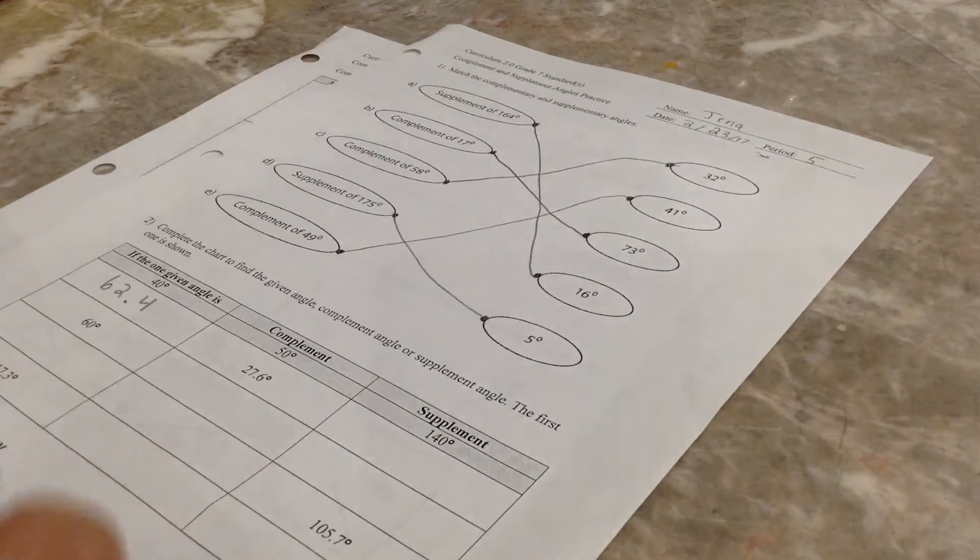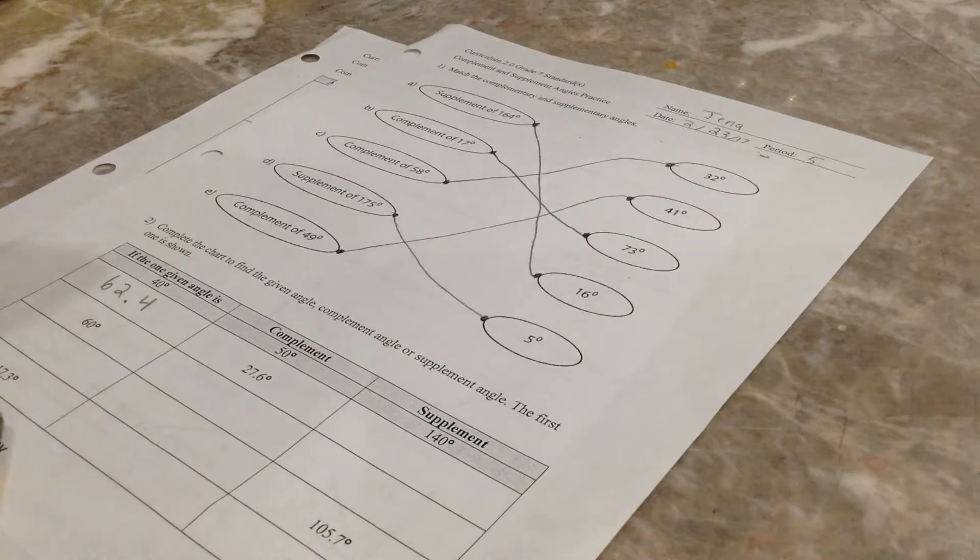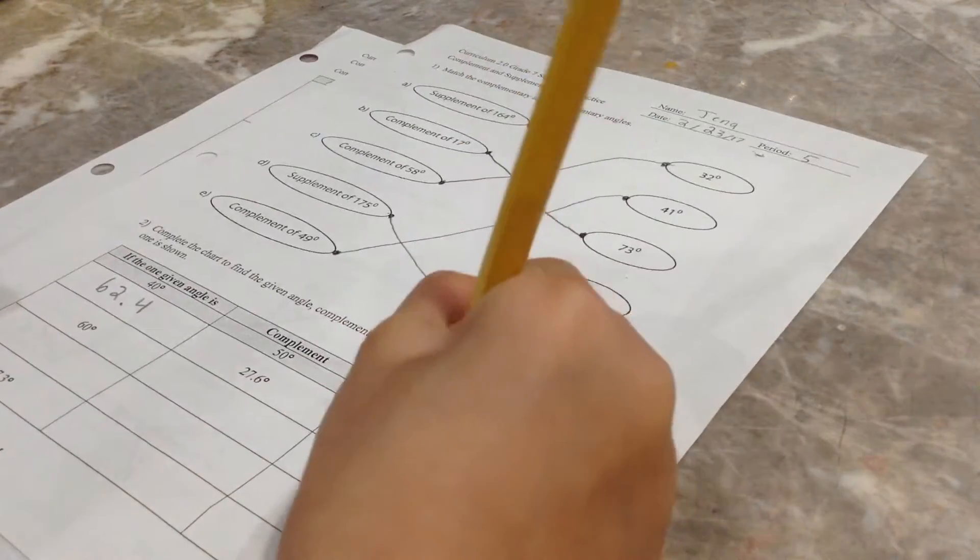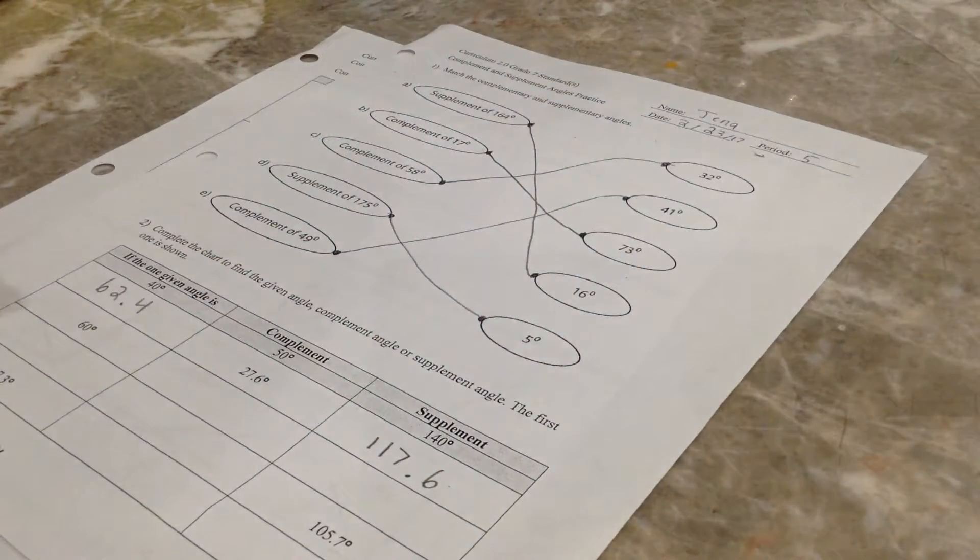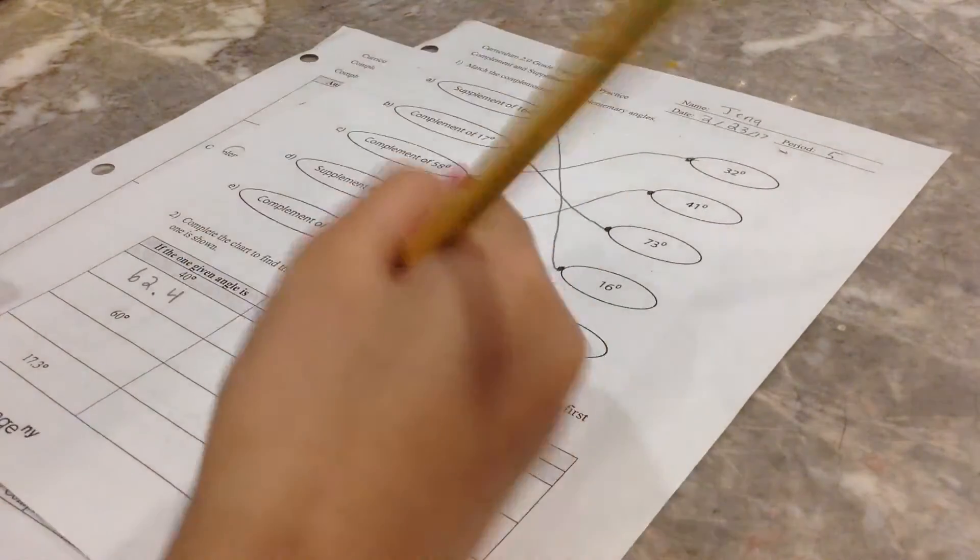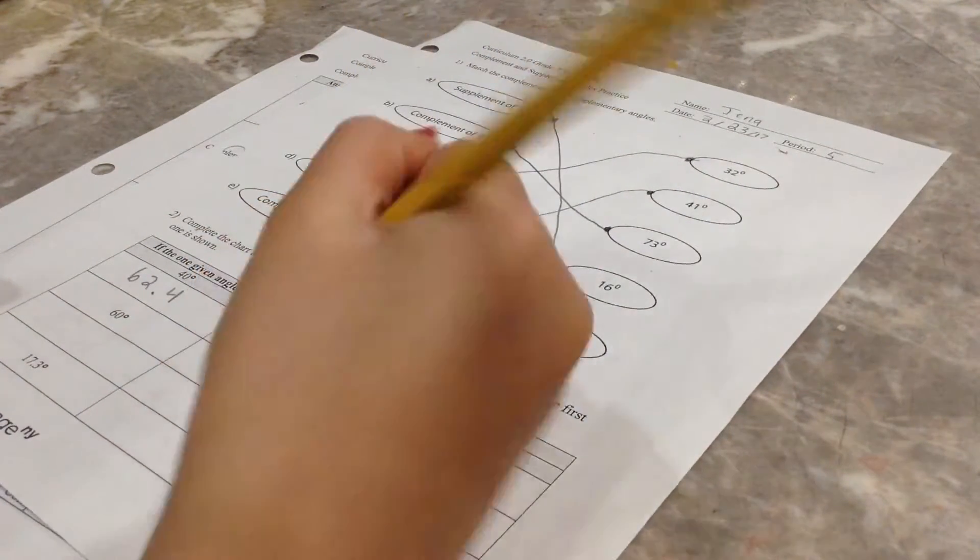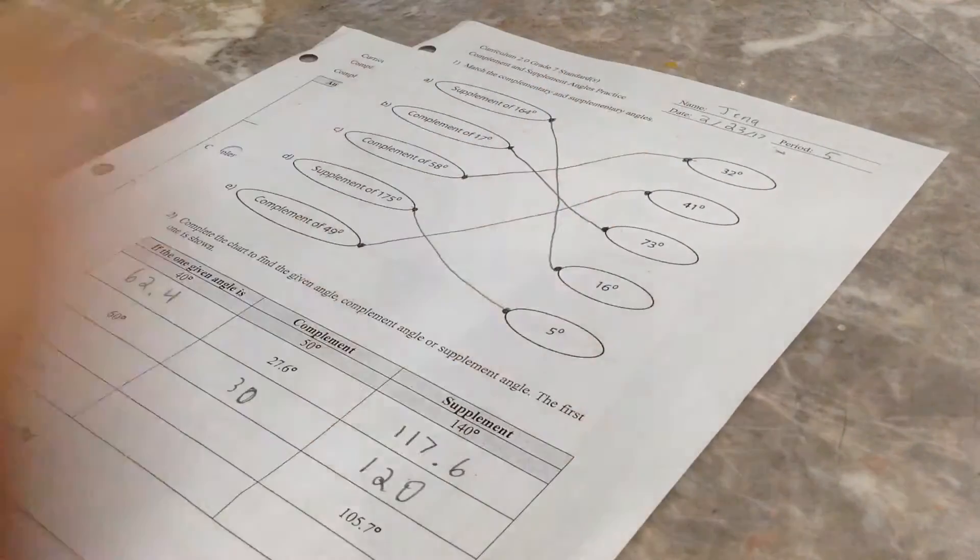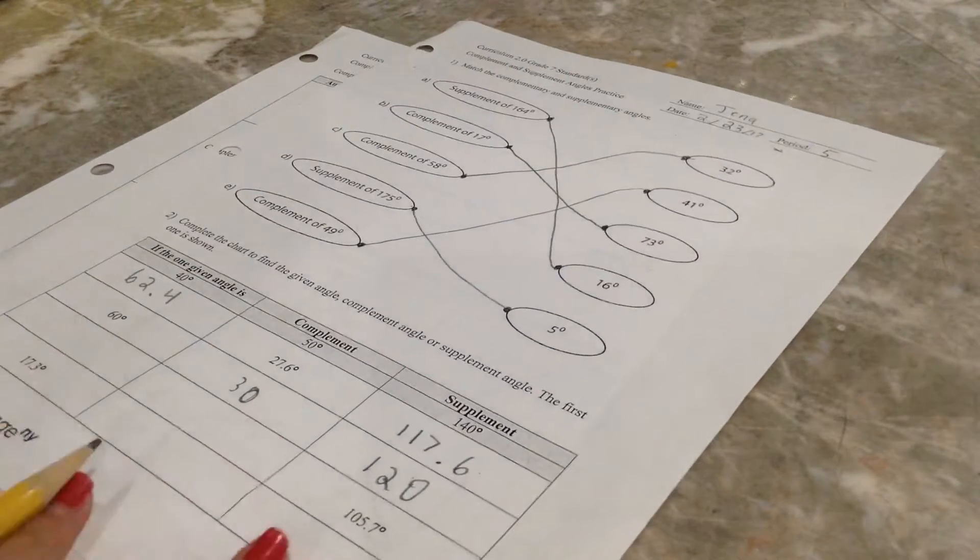And then this one. Oh. And then you do 180, subtracted by 62.4. And that equals 117... Oh, that makes more sense. 117.6. This one's 30. That looks like a 36. And then this one is 120. And I'm sure you guys can figure out this math by yourself, but... You don't need me.